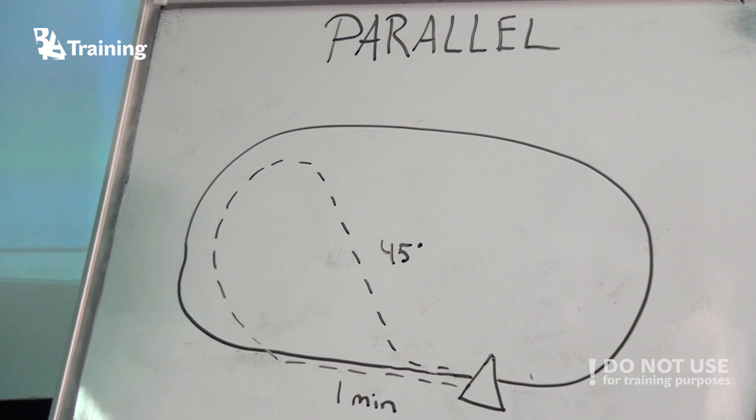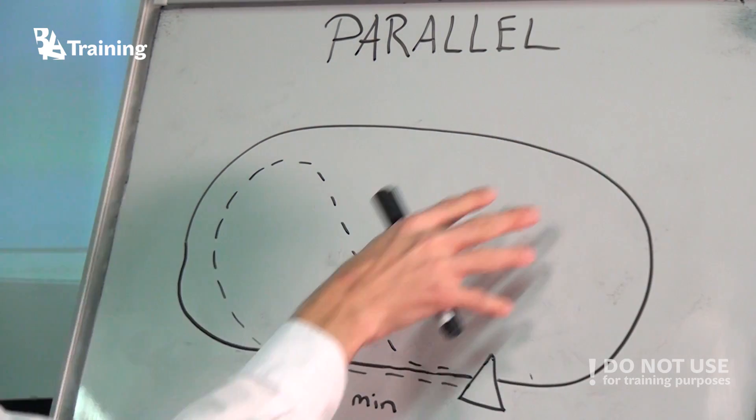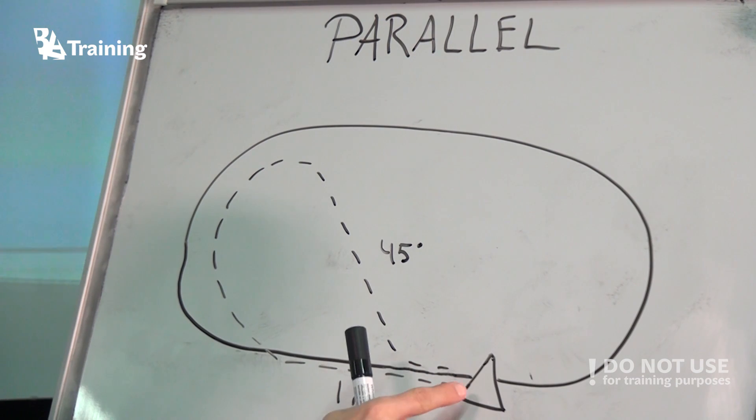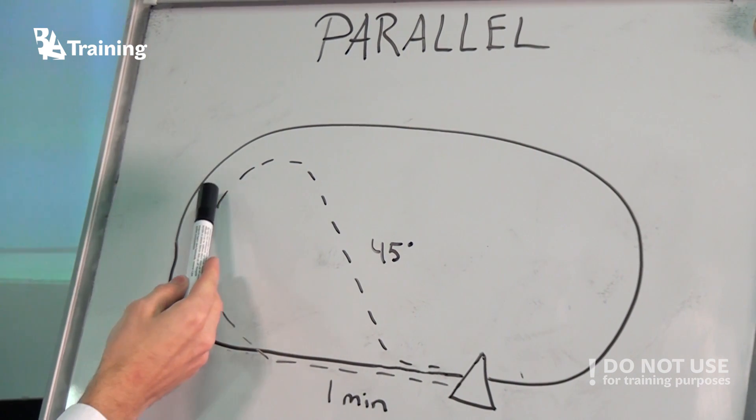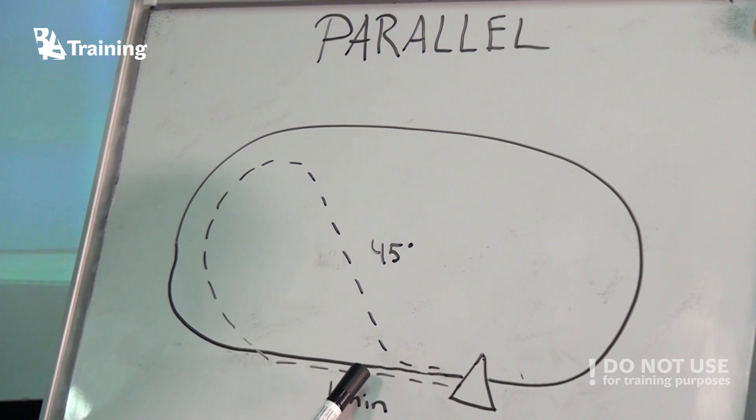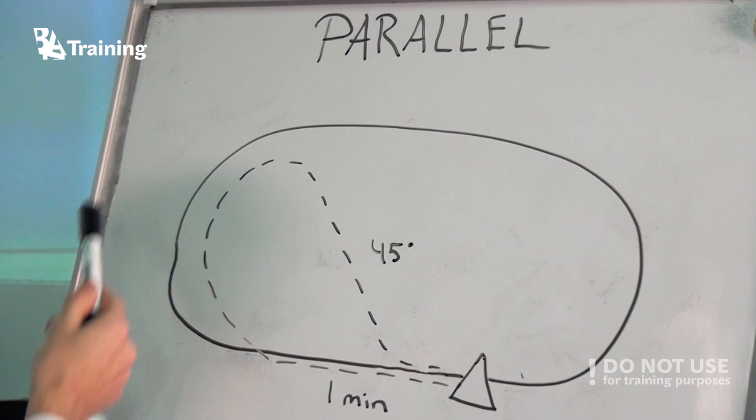Parallel entry. In this case, we are coming from somewhere here. We proceed to the fix and then we turn in the opposite direction of the inbound track. We time one minute and then we start to turn with right one until we can intercept the inbound course. And it's good to intercept it at approximately 45 degrees. And after that, you establish the wind correction angle on the inbound leg and you start the holding procedure.